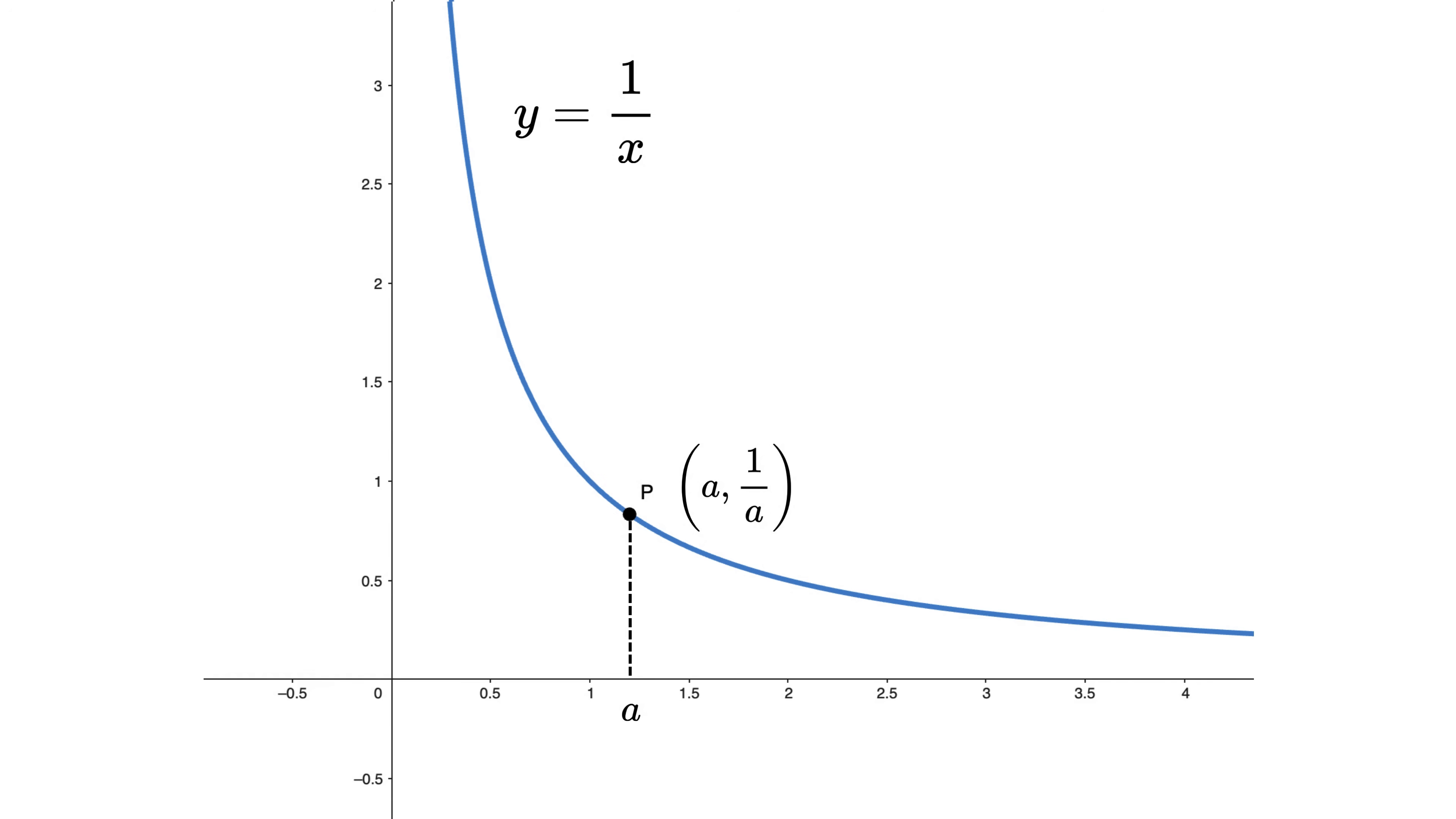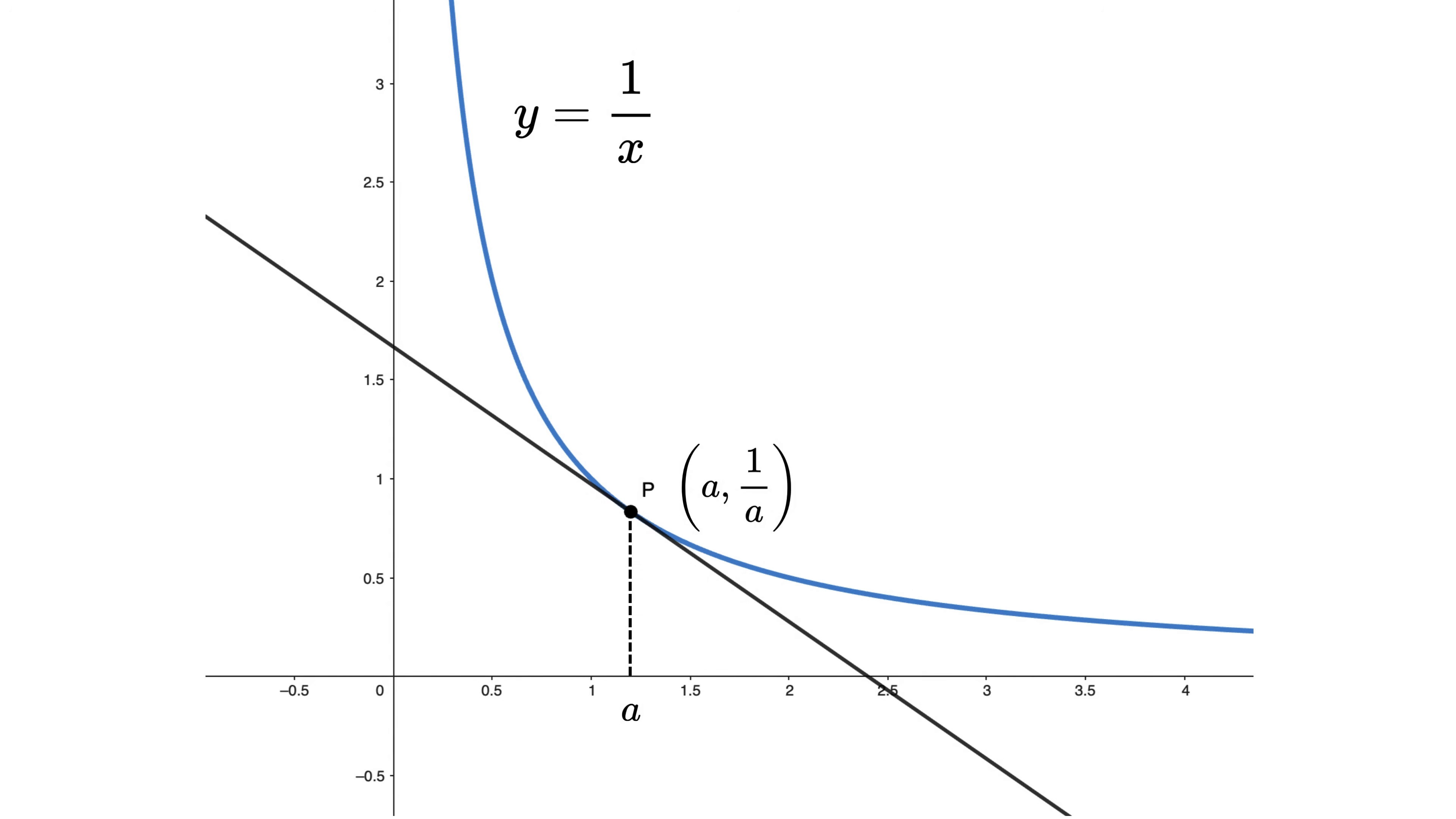Now we will draw a tangent to this curve at this point p. Note that a tangent is a straight line that just touches a curve at one single point without cutting it, having the same slope as the curve at that point. This tangent line cuts the x-axis at this point and the y-axis at this point, forming a right triangle like this.